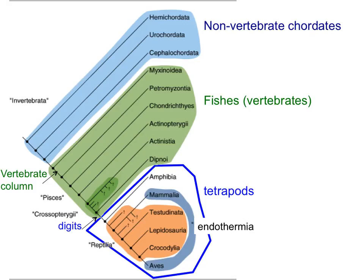Let's look at this example — a phylogeny of all existing chordates. Chordates include vertebrates plus invertebrates that have a notochord. Some groups are chordates but do not have a vertebral column; instead they just have a notochord. The green group here represents all fishes, including bony fishes, cartilaginous fish like sharks, as well as lampreys and lungfishes.